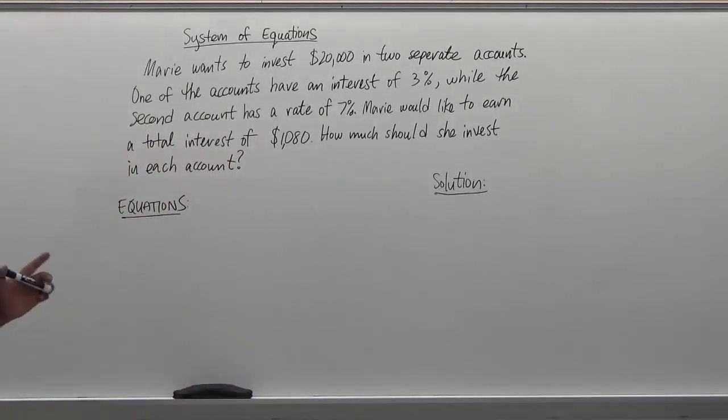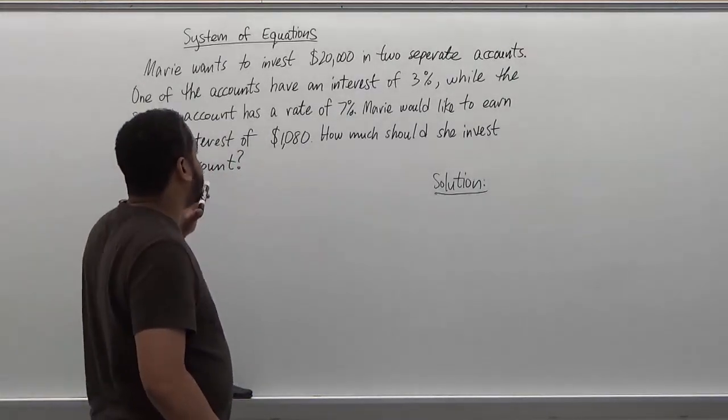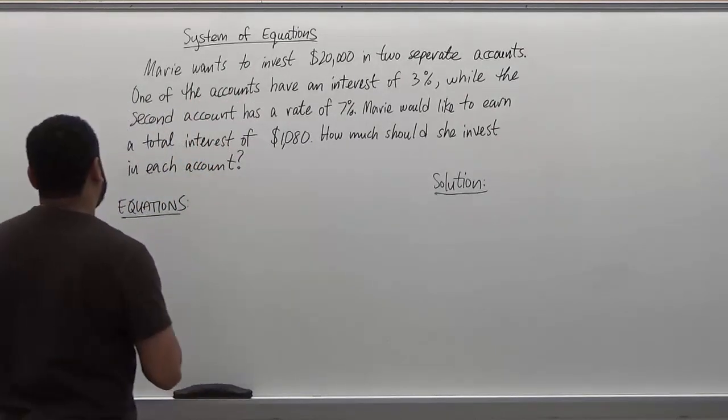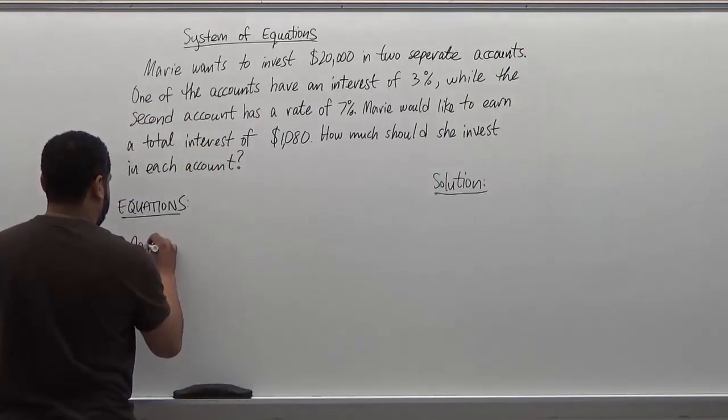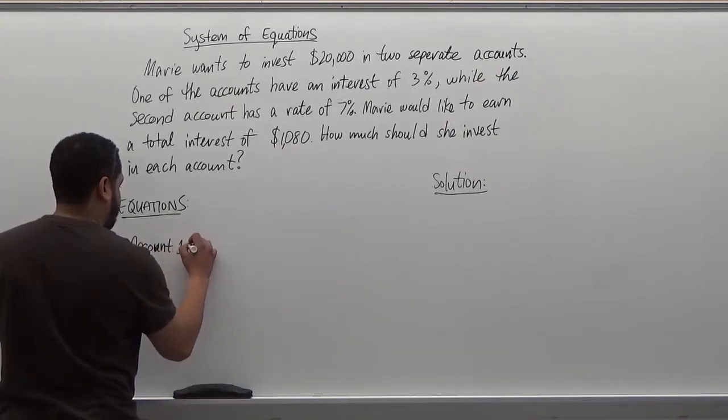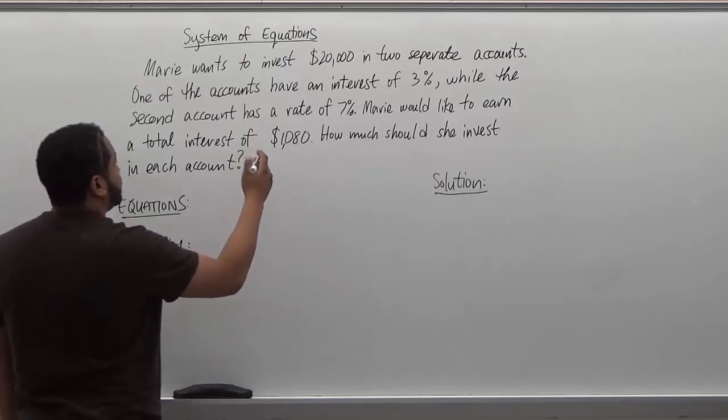So what we first have to identify here is we have two different accounts, right? The first account has a rate of 3%.